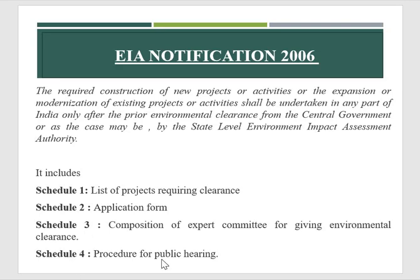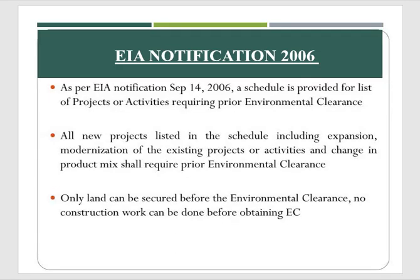Schedule 4 is the procedure for public hearing — the public is always allowed to share their concerns. According to this EIA Notification 2006, a schedule is prepared listing projects or activities requiring prior environmental clearance. These projects are first sorted, then they undergo various criteria before finally deciding whether to give clearance or not.